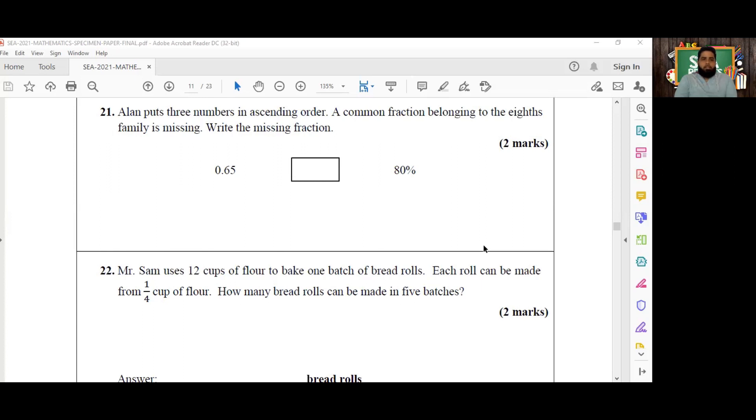Alan puts three numbers in ascending order. A common fraction belonging to the eighths family is missing. Write the missing fraction. So we have these numbers here, they're already arranged in ascending order and the one that is missing belongs to the eighths family.